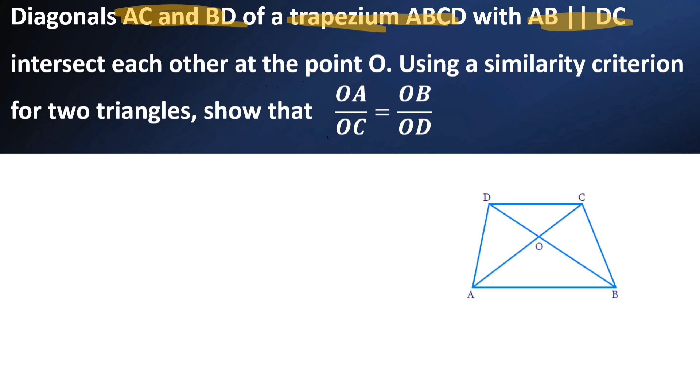Here, AB parallel CD. Using similarity criterion for two triangles, show that OA by OC is equal to OB by OD. Now, we have to use similarity criterion for the triangles. Which of the two triangles may be similar in this one?